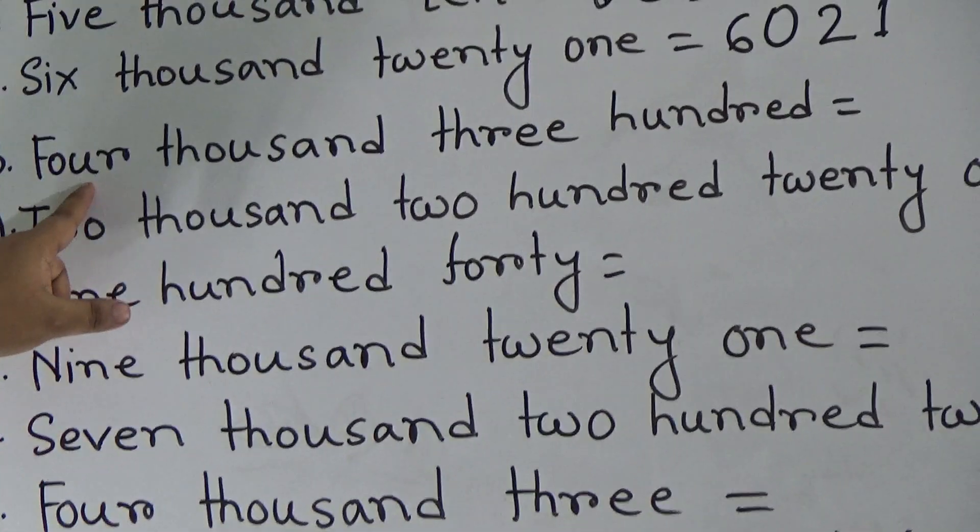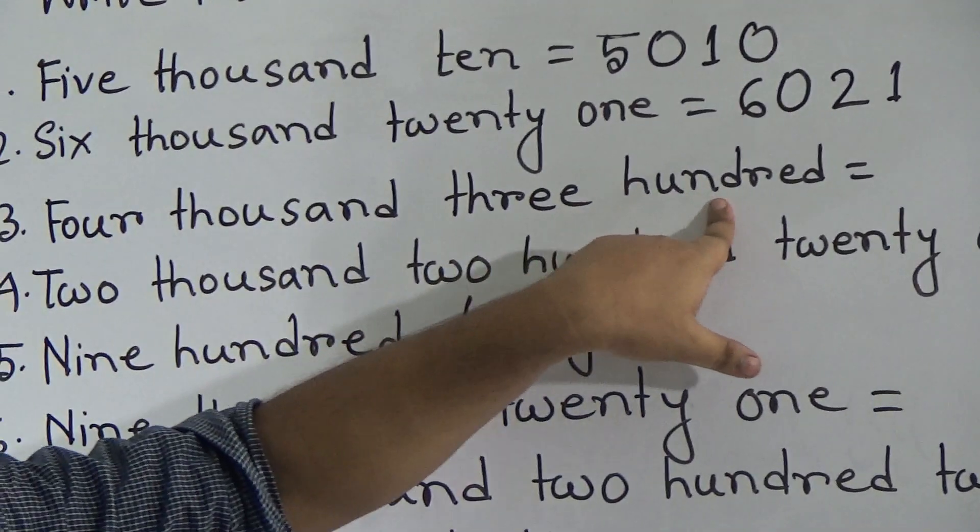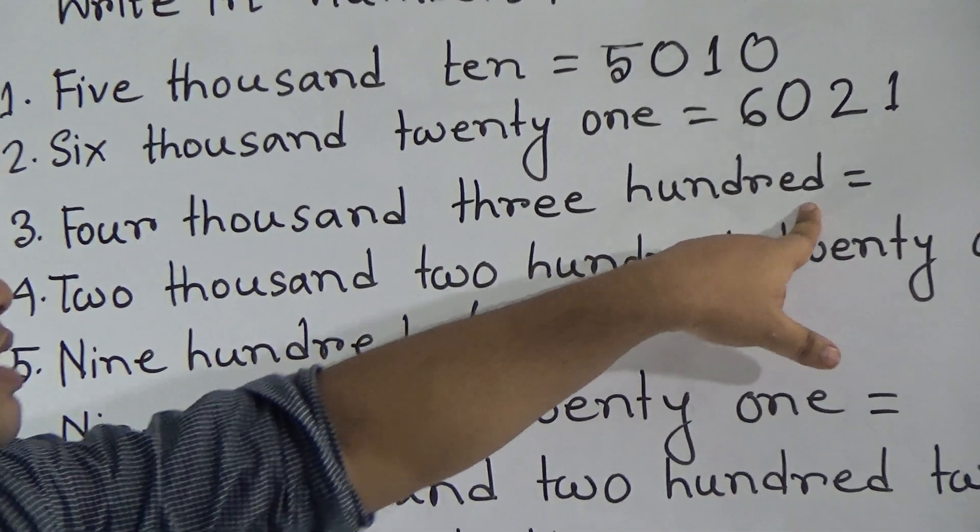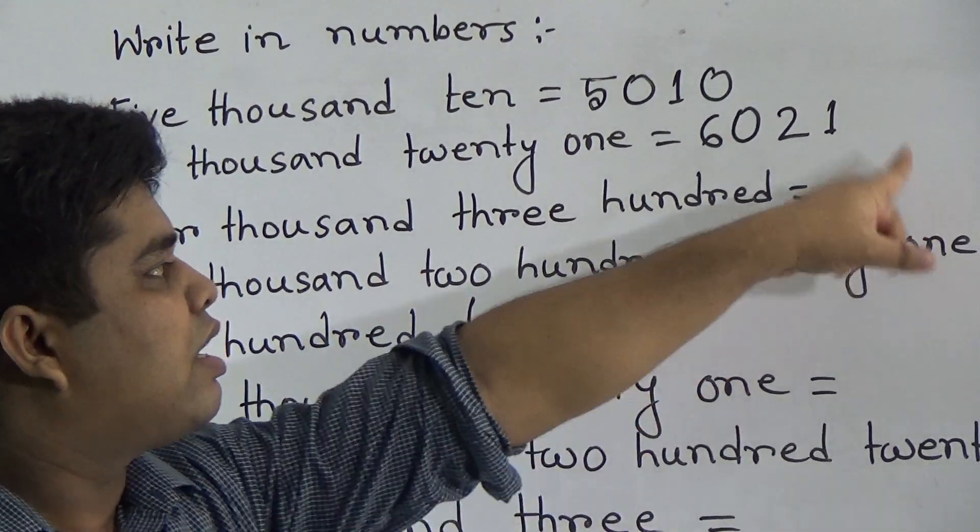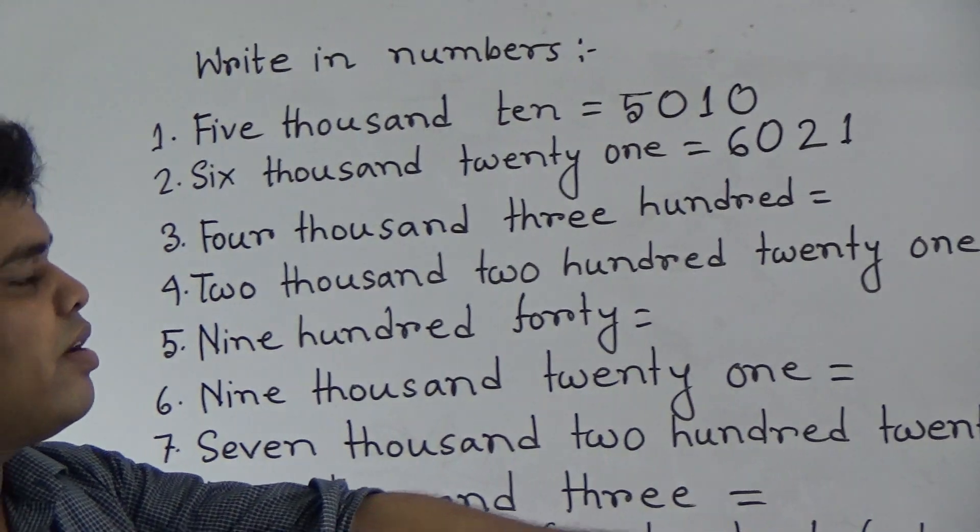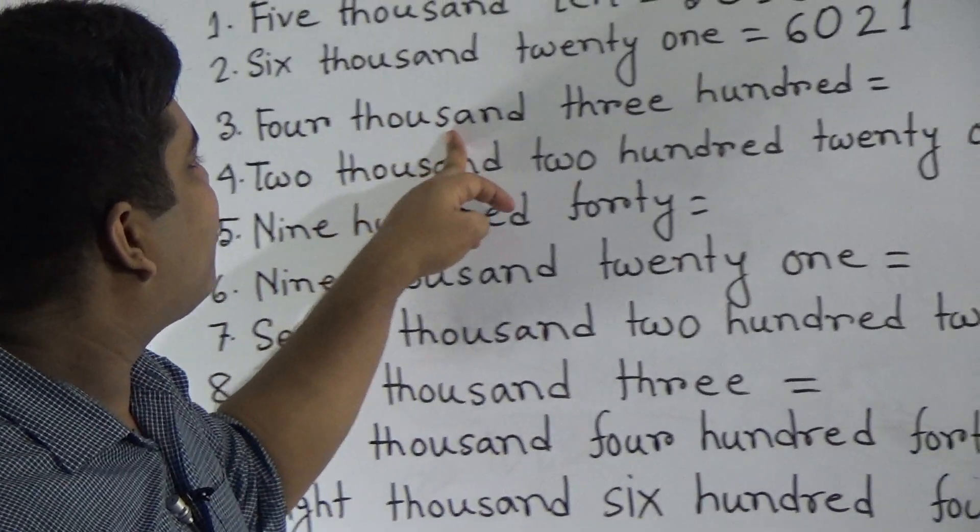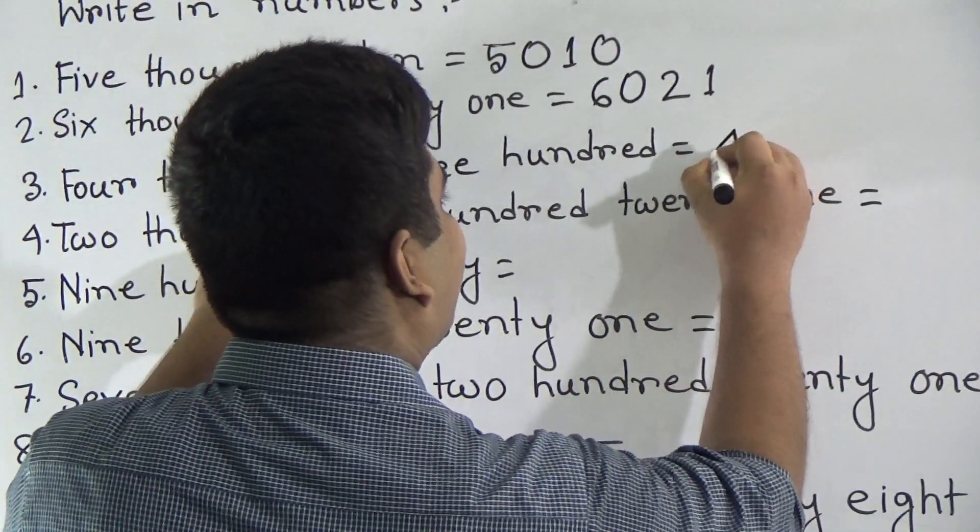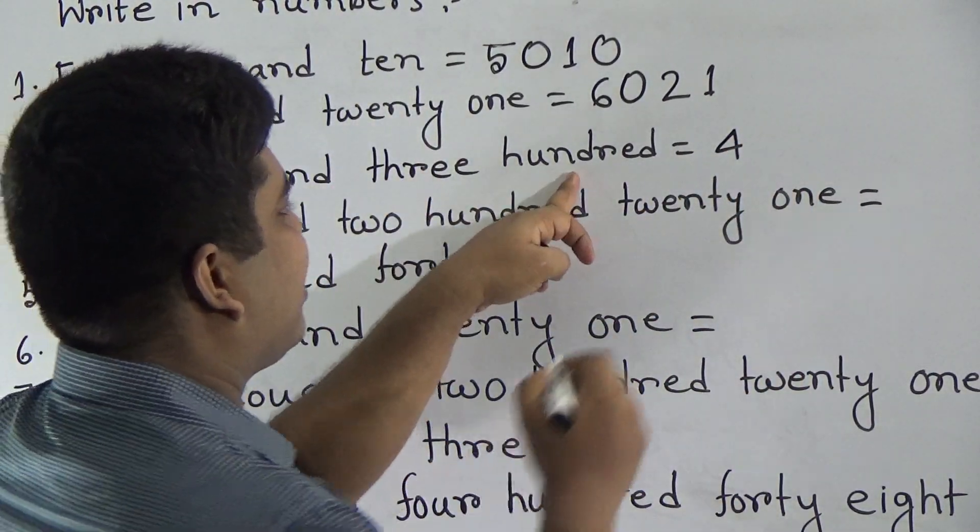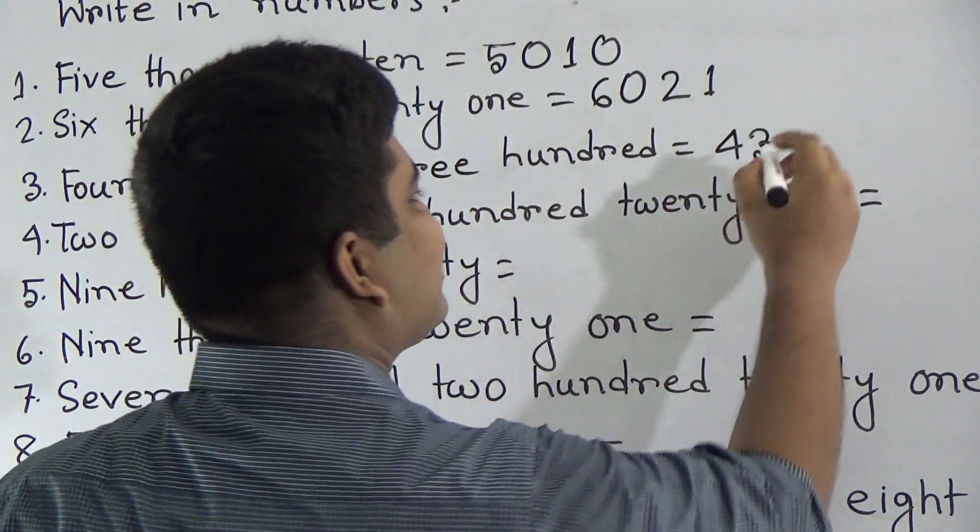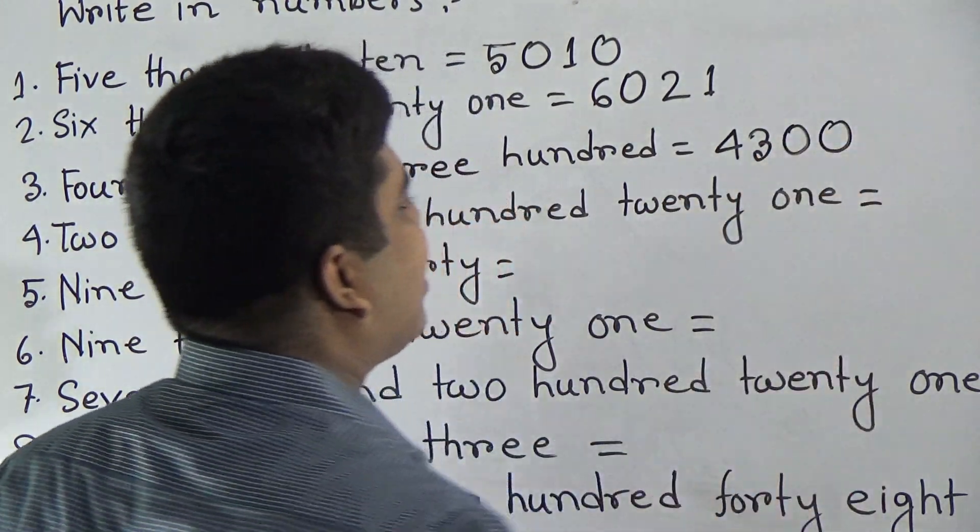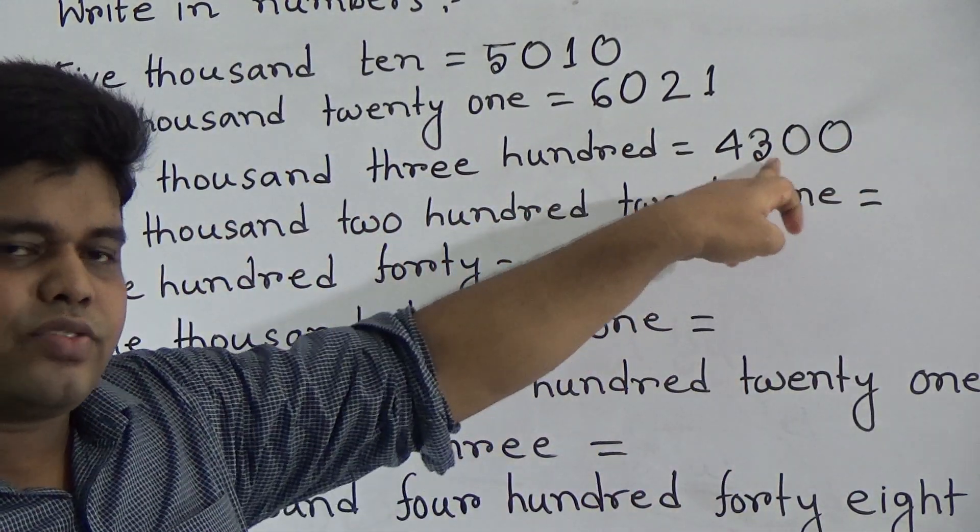Next number, 4300. Here, notice, 10's place and 1's place is absent. For this reason, 10's place is 0 and similarly, 1's place is 0. So, we write 4 first as 4000. Next, 300. That means, write 3. 1's place and 10's place is absent. That means, 0 and read as 4300.